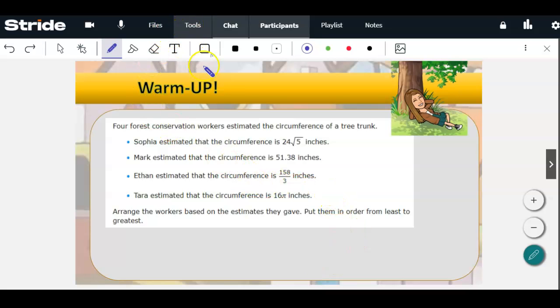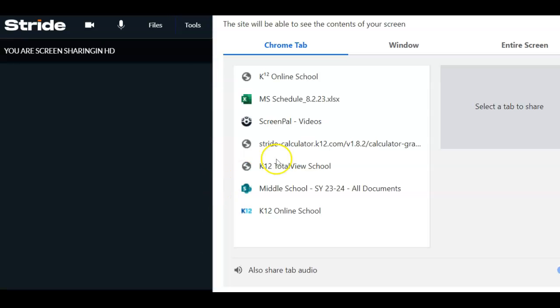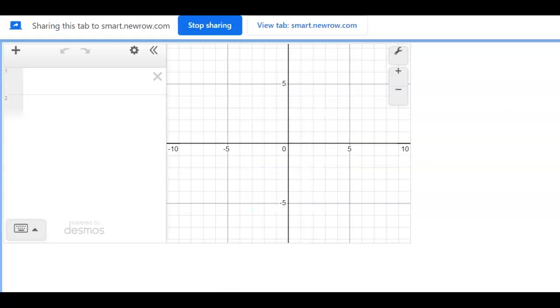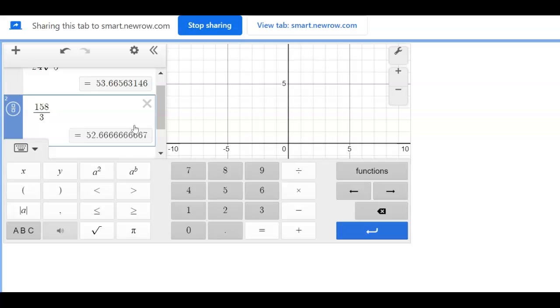So you've got to change them all to the same format. Let me go ahead and share the calculator. Remember that you're changing these all to decimals. Make sure you're writing them down. So then you have 24 times square root of 5, and we get approximately 53.67. Then we do 158 over 3, divided by 3 is 52.67.